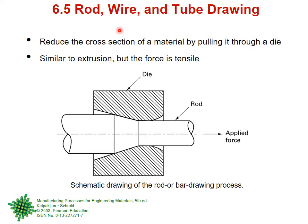While extrusion or forging can produce hundreds or thousands of different shapes, drawing produces essentially only three shapes — rod, wire, and tube. A rod and wire are both solid cylinders with a round cross-section; the difference is that rod has a larger diameter while wire has a very small diameter. Tube is essentially a hollow rod. Just consider electrical wire alone — millions of tons are used worldwide, making the application of this single product enormous.